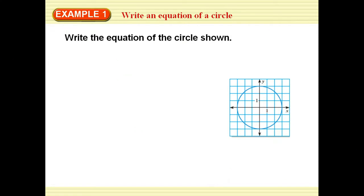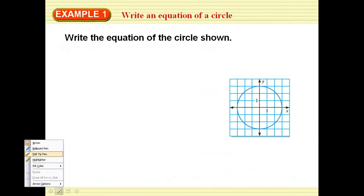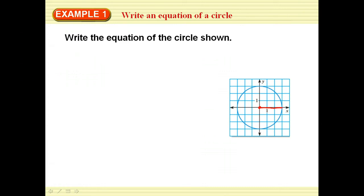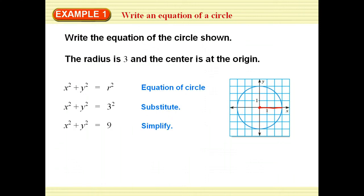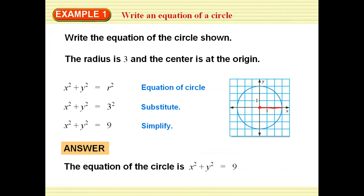So if I want to write an equation for this circle, I see that the center is at the origin, right here at 0, 0. I find my radius is 3 by simply counting, and since the radius is 3, I plug in x squared plus y squared equals 3 squared, which is 9. So the equation of this circle is x squared plus y squared equals 9.